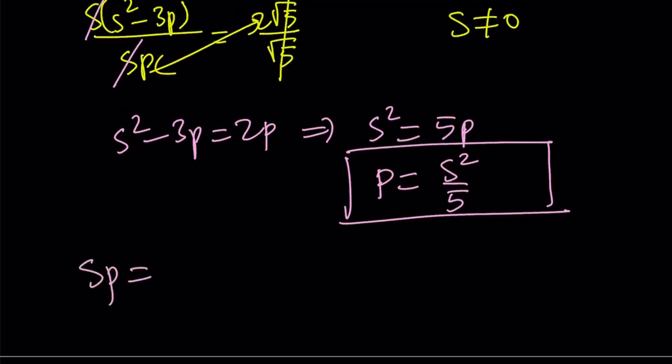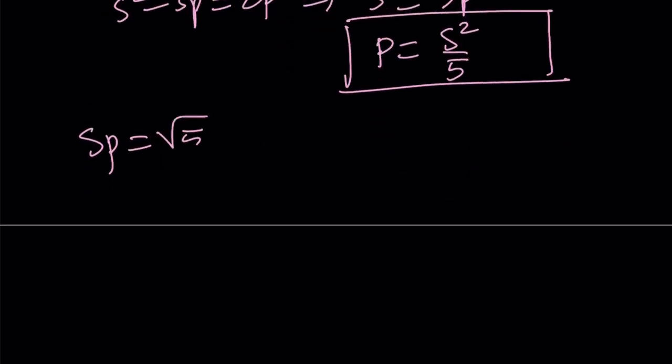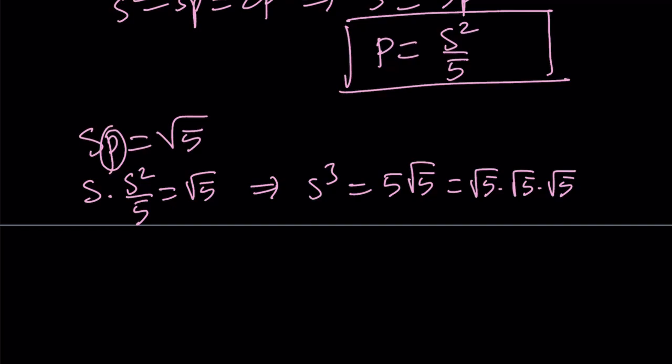Guess what we're going to do with that? We have sp, the product, the second equation in our system, equals √5. Now I can replace p with s²/5. That's going to give me s × s²/5 = √5. s × s² equals s³. If you cross multiply, you get 5√5. If you're familiar with radicals, 5√5 is √5³. So that explains why s = √5. And p is s² which is 5 divided by 5, equal to 1.